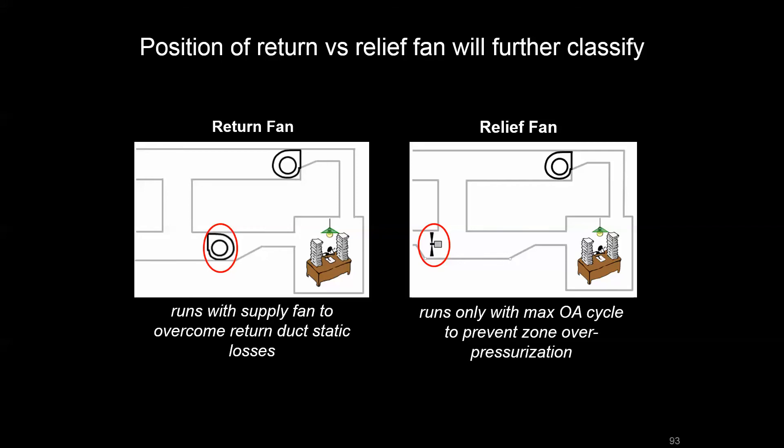On the left we have a return fan, and its design intent is different. That return fan runs with the supply fan and its job is to constantly overcome the duct static losses on the return side to bring air back to the unit. We could have upsized the supply fan to accomplish that, but with medium or larger systems the more you upsize the supply fan, the more you're pressurizing your space. To avoid that over-pressurization, the return fan is installed.